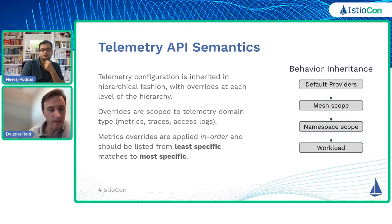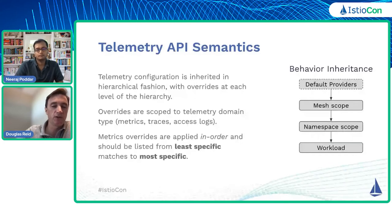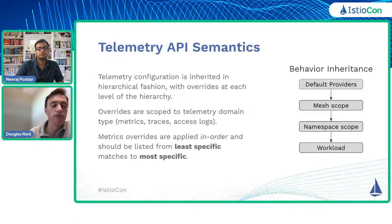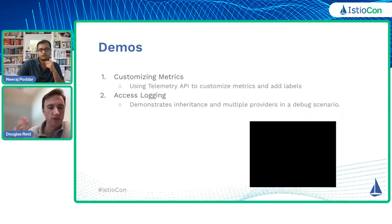Metrics overrides are the only thing that are really non-intuitive about how this works, because they are lists that are appended and the order matters. Our recommendation is to have the least specific overrides at the top and the most specific matches at the bottom — so you can say for all metrics remove these three fields, and then add one back in for only a specific metric at the bottom. All this will probably make more sense through the demos, so let's transition to that.